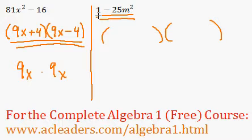And the square root of 1 is just 1, so I can write a 1 here and a 1 over here. And we have 25m squared. So the square root of 25 is just 5, and m squared is just m. So I'll write a 5m over here and a 5m over there,